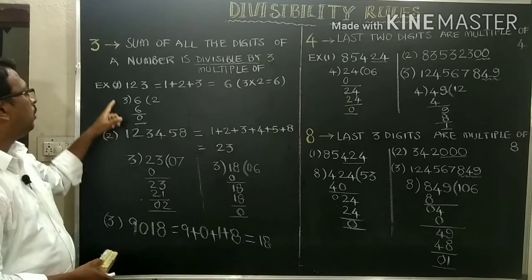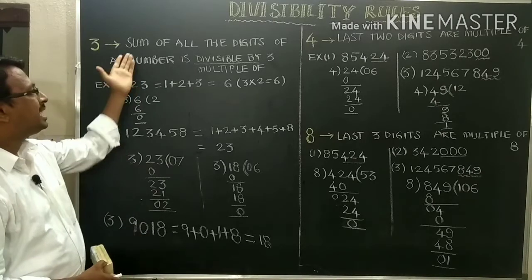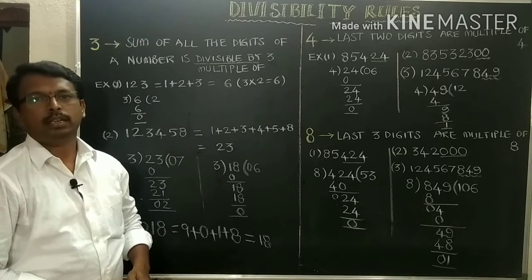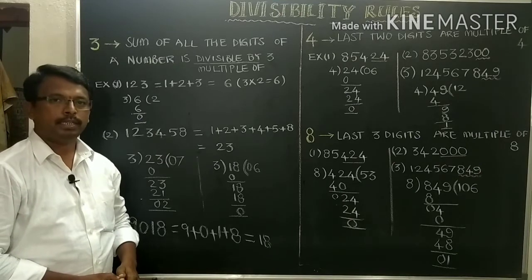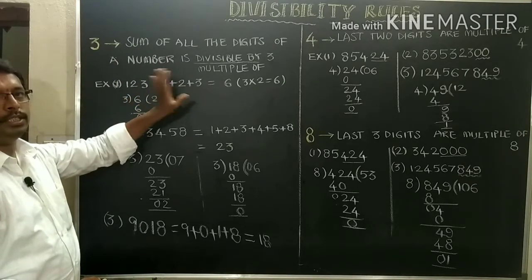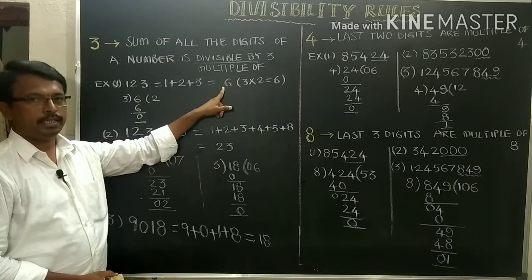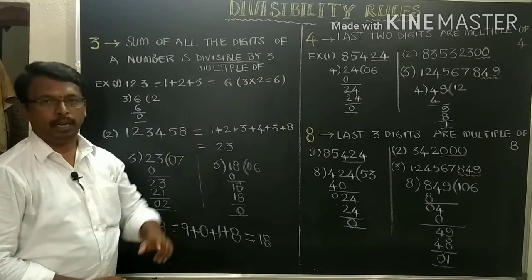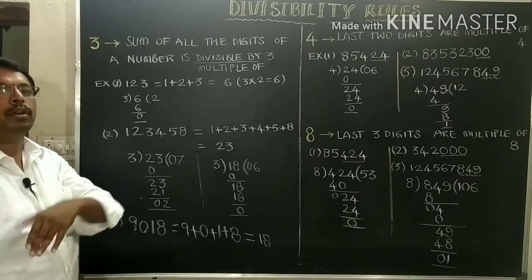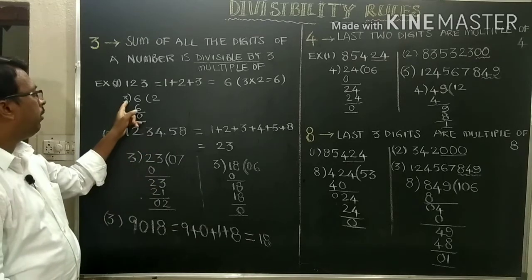For example, 123. Sum means addition, difference means subtraction, product means multiplication. Here sum means we have to add the digits of the number. 1 plus 2 plus 3 — we will get 6. 6 is a multiple of 3, it will come in the 3 times table. So we can say 123 can be divided by 3.